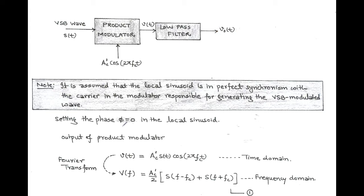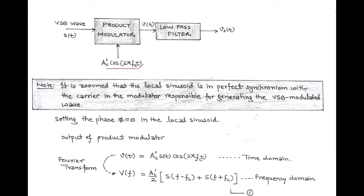For this, setting the phase phi equals to 0 in the local sinusoidal carrier. The output of the product modulator, that is V function of T, equals to AC' into S(T) cos(2π fc T). This equation is in time domain and it represents the product of the VSB wave S(T) and the locally generated sinusoidal carrier having phase phi equals to 0.